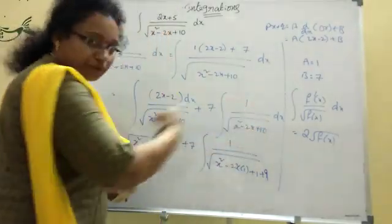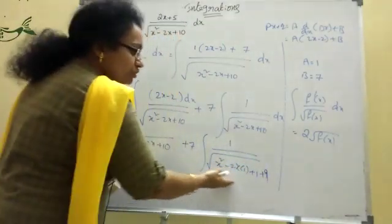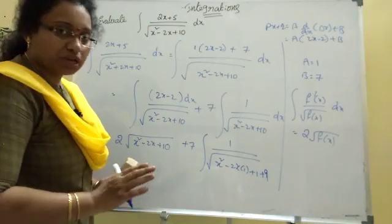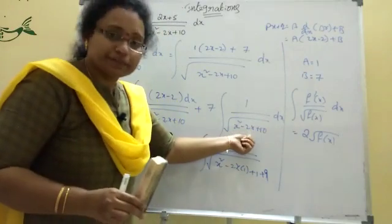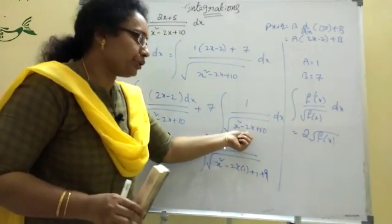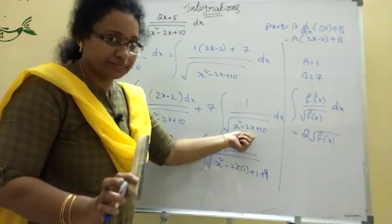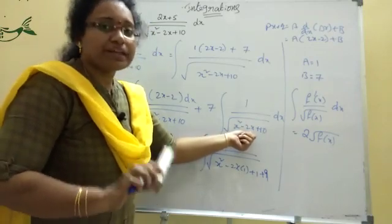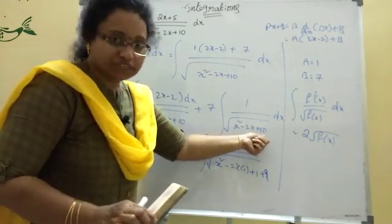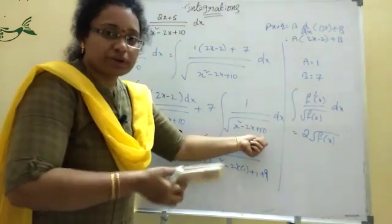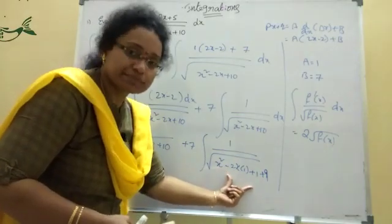So, 1 we are taking aside, 10 minus 1 is 9. 9 I'm writing. Using the formula A square plus B square minus 2AB. 2AB is this. 2 into 2AB. A is split, 2x aside, that is B. Clear? 1 adding and separating, actually. 1 adding and separating. A plus B, A minus B whole square.